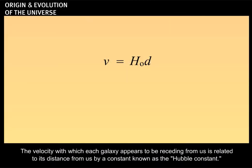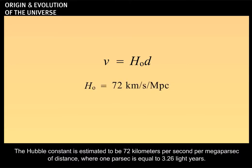The velocity with which each galaxy appears to be receding from us is related to its distance from us by a constant known as the Hubble constant. The Hubble constant is estimated to be 72 kilometers per second per megaparsec of distance, where one parsec is equal to 3.26 light years.